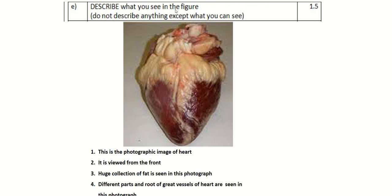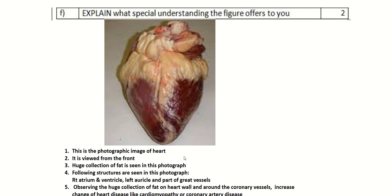Describe what you see in this figure. This figure shows different parts and roots of the great vessels of the heart. Why this figure is chosen: I think you see there is a huge collection of fat, so due to this fat, there is a chance of several heart diseases like cardiomyopathy and coronary artery disease.